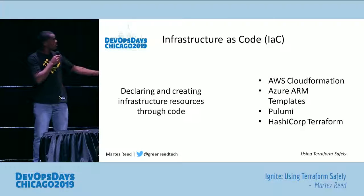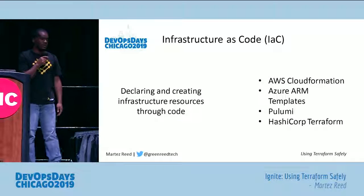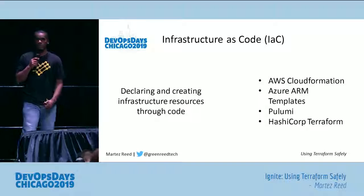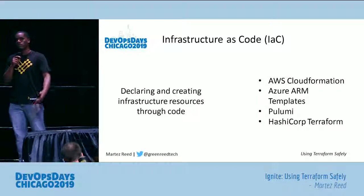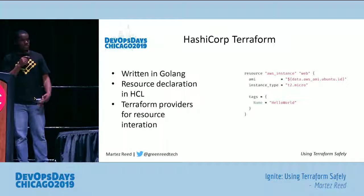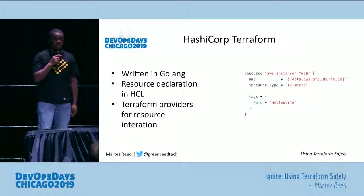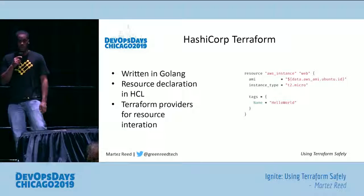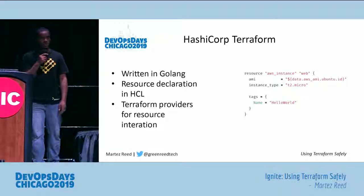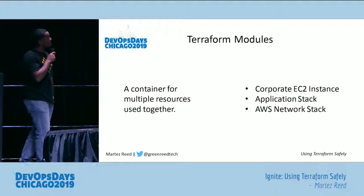So what is Terraform? It's typically referred to as infrastructure as code — essentially declaring infrastructure through code, or those resources themselves. There are a number of popular tools out there; some are specific to a particular public cloud, some aren't. Terraform itself is written in Golang, declared with the HCL language, and Terraform resources themselves are pretty declarative, as you can see on the screen.